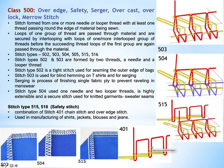If you closely examine this stitch, you will see that the needle thread along with the looper thread gives the same appearance as stitch 401 — with the characteristic appearance on the face side and a double chain on the back side. So class 515 is a combination formed by stitch 401 and an overhead over-edge stitch, like stitch 503.